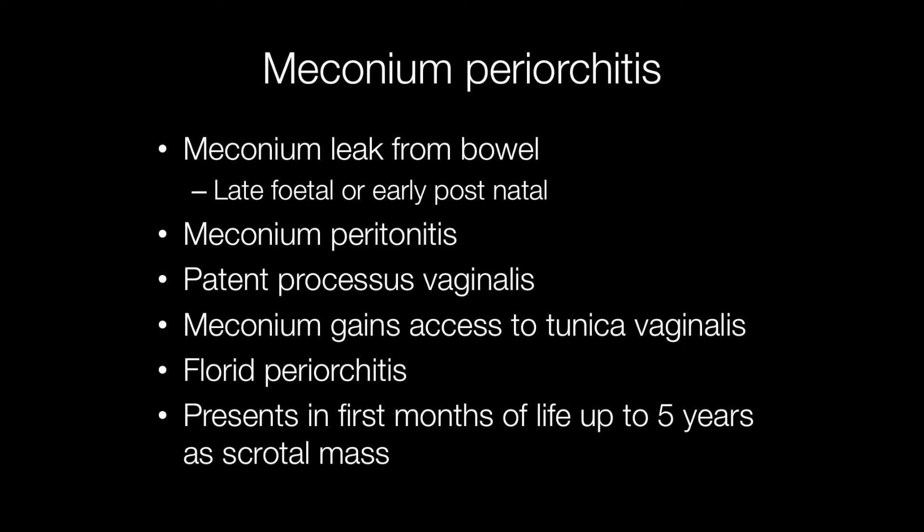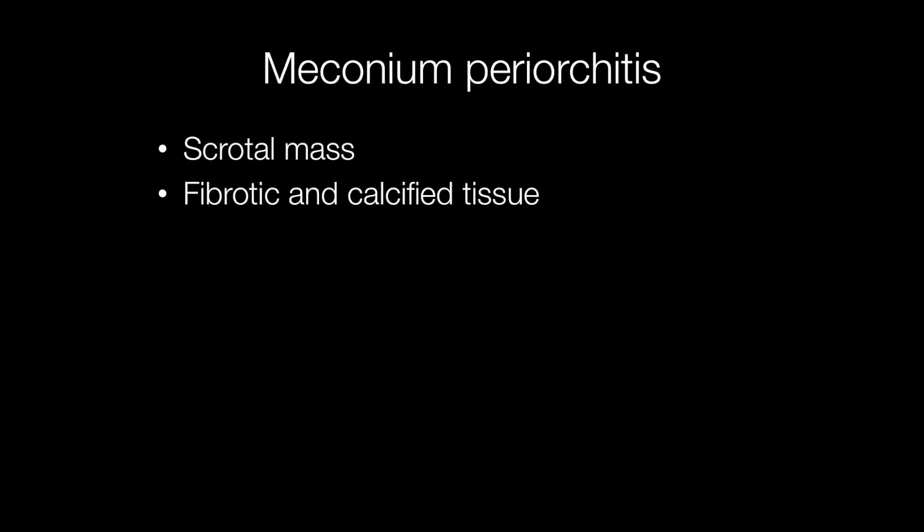Meconium periorchitis is an unusual cause of a scrotal swelling in a neonate or a child up to around five years. The periorchitis is caused by organisation of the inflammatory response by meconium that has gained access to the tunica vaginalis through a patent processus vaginalis. This occurs when there has been an episode of meconium peritonitis caused by leak of meconium from the bowel, usually in the late fetal stage or early postnatally. This results in a scrotal mass of fibrotic calcified tissue.